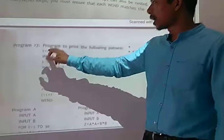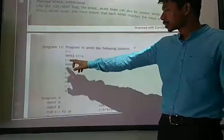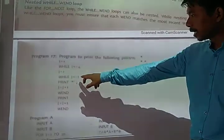Here as you can see, i equals 1, then while i less than or equal to 4. Then next, j equals 1, then while j is less than or equal to 1.